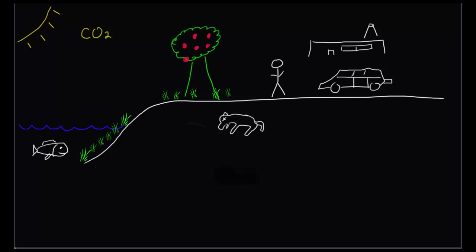So here's our little picture. We have an apple tree, we have plants both on land and underwater, we have a person, a car, a factory. Poor Fido has passed away and he's buried underneath the earth, and we have a fish. And here we see that we have carbon dioxide floating around in the atmosphere.